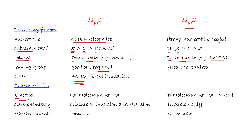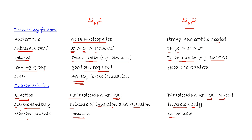For kinetics, SN1 is unimolecular — the rate depends only on the substrate — while SN2 depends on both substrate and nucleophile. The stereochemistry of SN1 products shows a mixture of inversion and retention. SN2 gives inversion only. Rearrangements are common for SN1 while impossible for SN2.